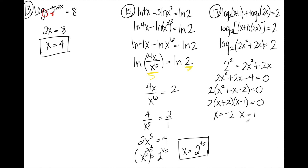Since I can't take the log of a negative number, I need to check both solutions. If I plug in negative 2: negative 2 plus 1 is negative 1, and I can't take log base 2 of negative 1, so I reject that solution. Checking x equals 1: 1 plus 1 is 2 — that's fine; 2 times 1 is 2 — that's fine. So the only solution for number seventeen is x equals 1. That's it for solving log equations. If you guys have any questions, feel free to leave them in the comments below. Have a great day.